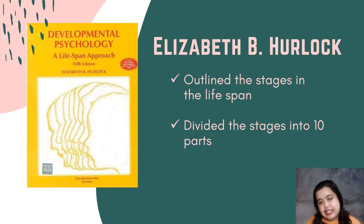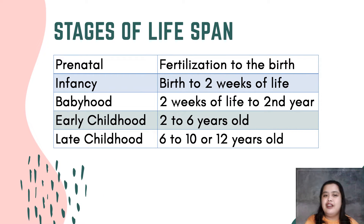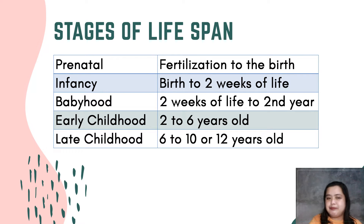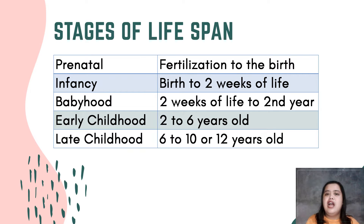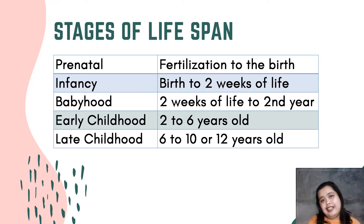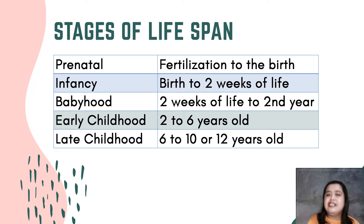The first stage is prenatal — from fertilization to birth. Before you are born, you are already counted in the stages of lifespan. Next is infancy, which is from birth to two weeks of life. Then we have babyhood — from two weeks to the second year. During this period, you can notice how rapidly babies grow and change. Many parents are surprised how quickly their babies outgrow their clothes within one to two months.